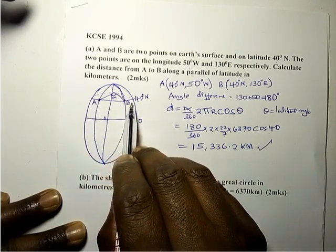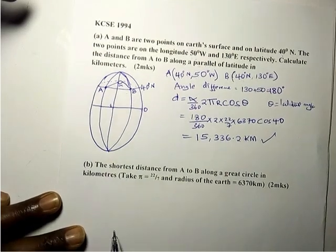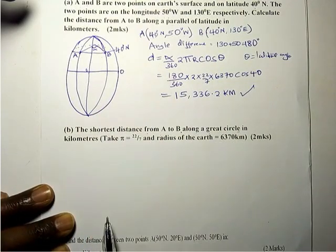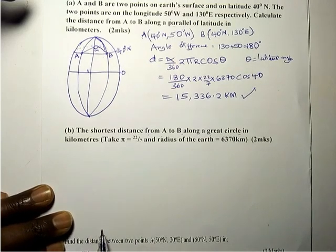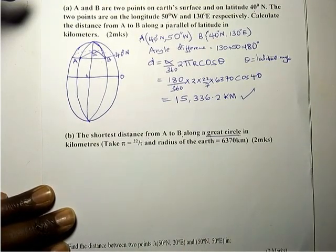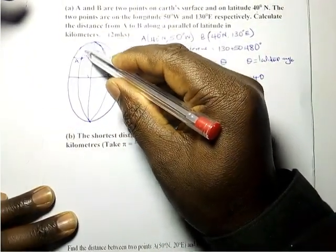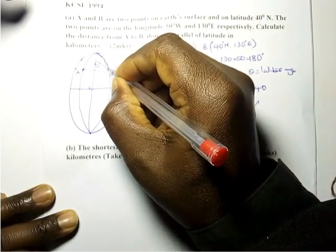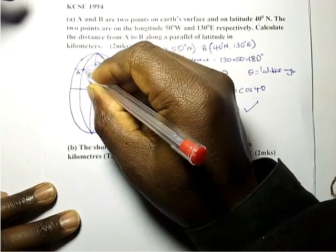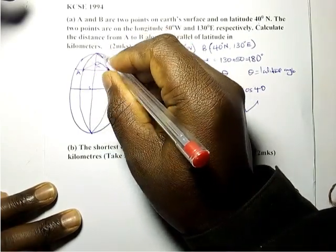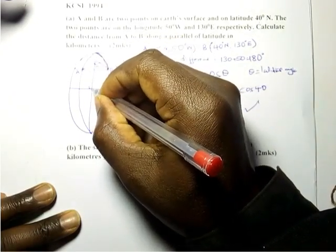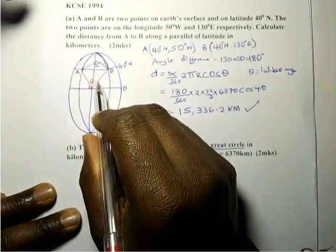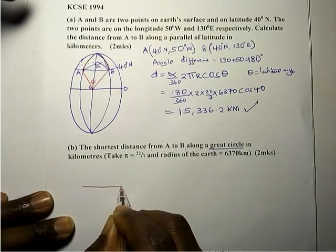Part B: the shortest distance from A to B along a great circle in kilometers. We are now calculating the same distance between A and B but along a great circle. A great circle runs along the longitude, so we are going to calculate the distance A to B going this way. If we go along the great circle, the center of that great circle is at this point, so our theta is going to be here. Let us extract this and look at the diagram.